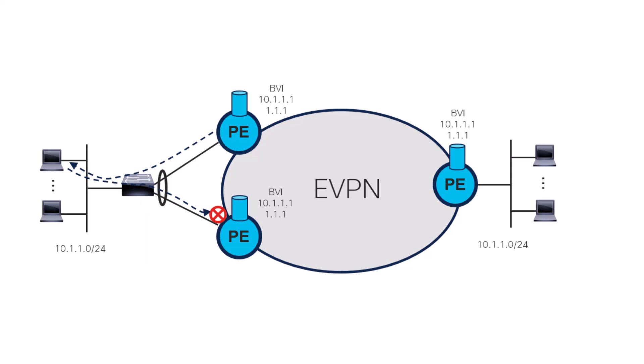And that's our second takeaway: for checking connectivity to local hosts on all-active dual home sites, you need to ping from both PEs. It's expected that for a given host, the ping will only be successful from one of the two PEs. Thank you for watching.